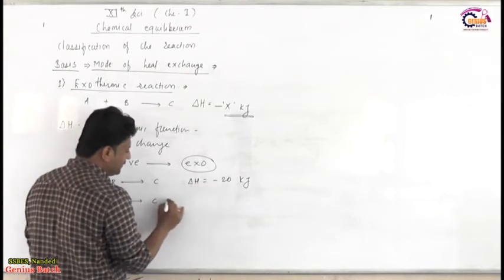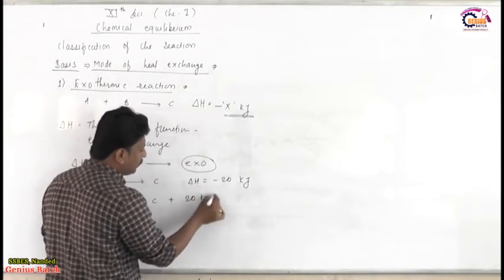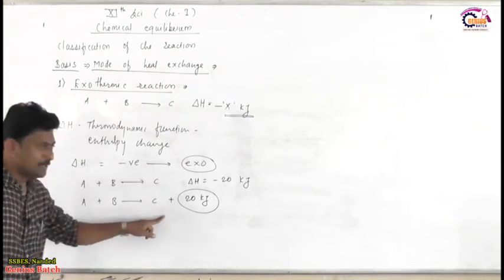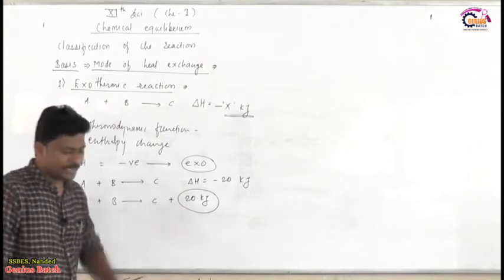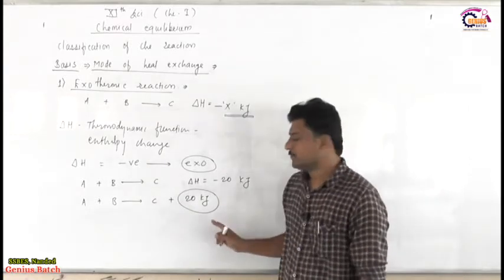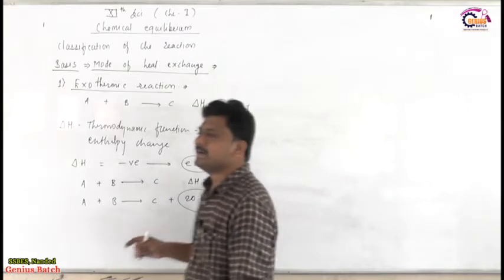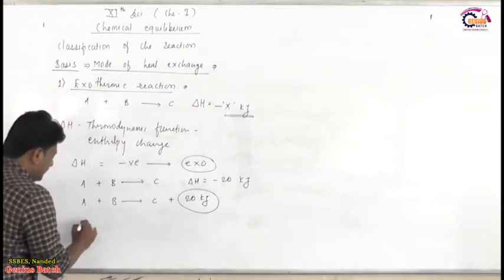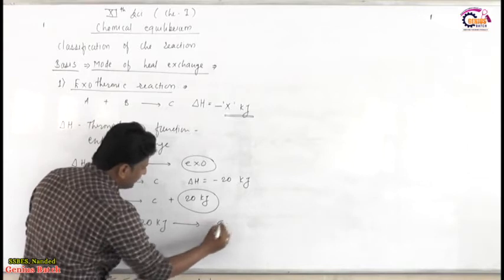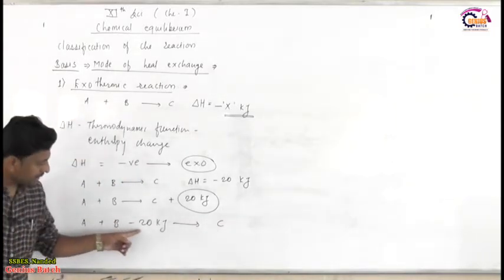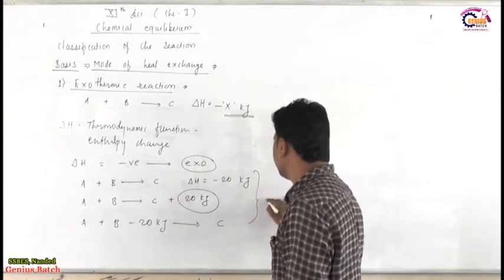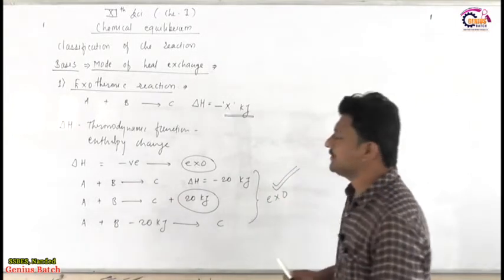The same reaction can be written in different ways. A plus B converts to product C, and it also produces heat energy. So A plus B converts to C plus 20 kJ — meaning product C is formed along with 20 kJ of heat, so heat is also treated as a product. Conventionally, it can also be written as A plus B minus 20 kJ converts to product C. In all three representations, the reaction is exothermic, and all are correct ways of representing it.